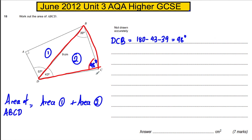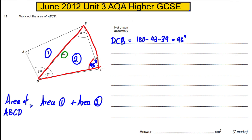Straight away, I have a side and an angle opposite, and I could use that to work out one of the other sides. The reason I want to do that is I know in the formula booklet that the area of any non-right angle triangle is a half AB sine C — that is, a half times two of the sides and the sine of the angle in between them. I've only got one side now, so if I worked out another side, that would be sufficient.